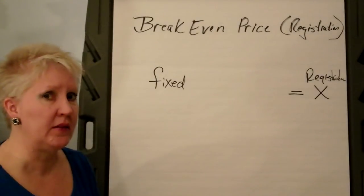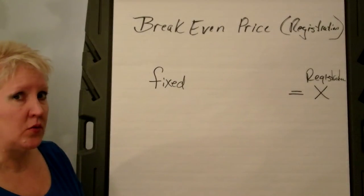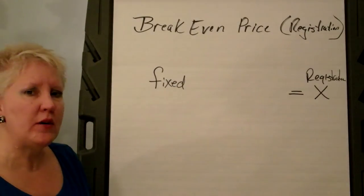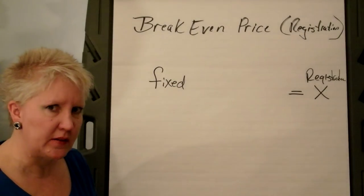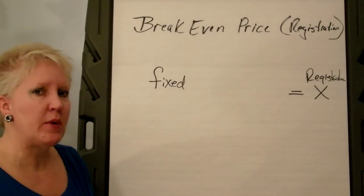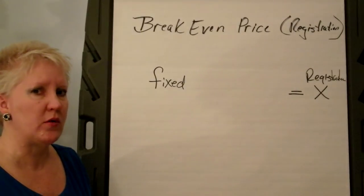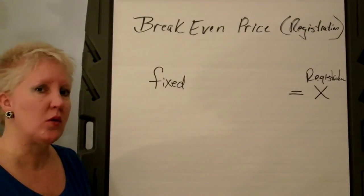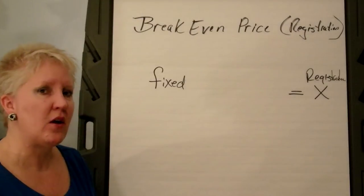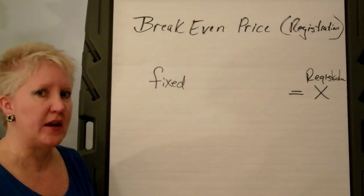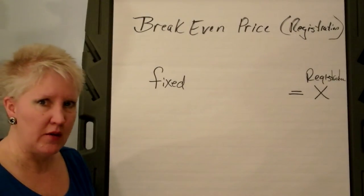On both formulas, the first thing you're trying to do is figure out how to cover your fixed cost. As we talked about in video two, those are the costs that are the same whether you have one person or 1,000 people coming. They are set — they are fixed. So how do you cover them?